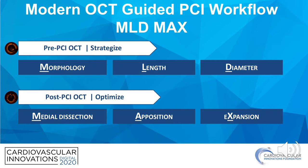After you've implanted a stent and done everything needed to optimize it, you repeat the OCT pullback. With the post-PCI OCT, you assess if there are any areas requiring optimization. The M stands for medial dissection, A is for apposition, and lastly X is for expansion, which is the most important metric and will determine future outcomes.